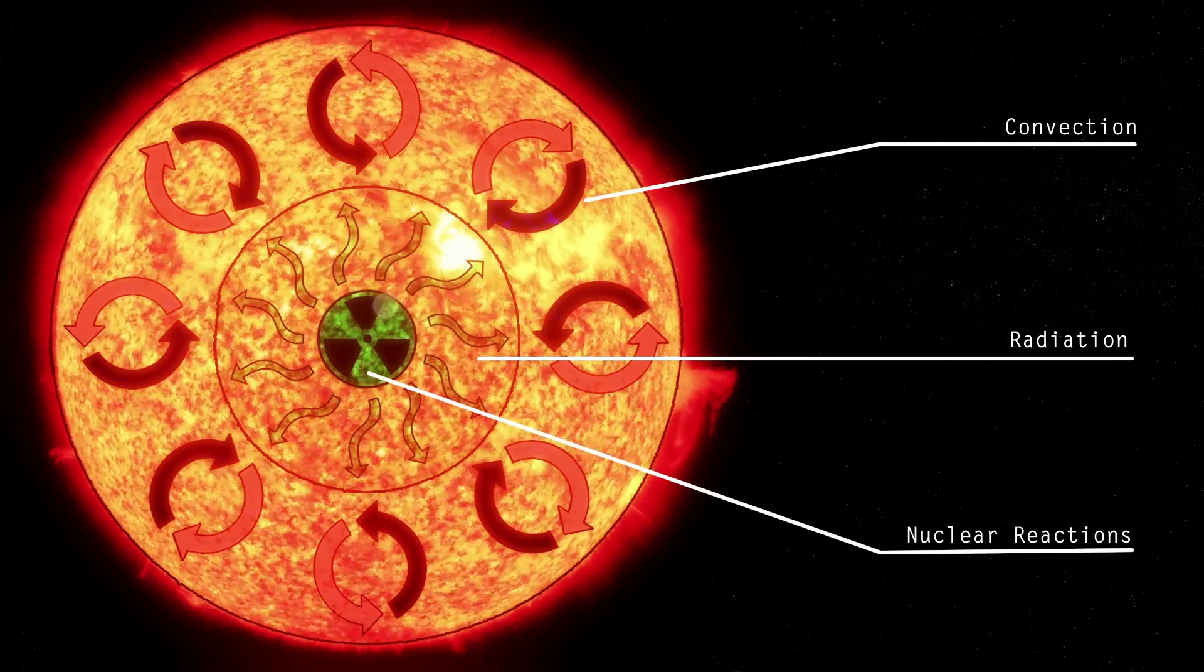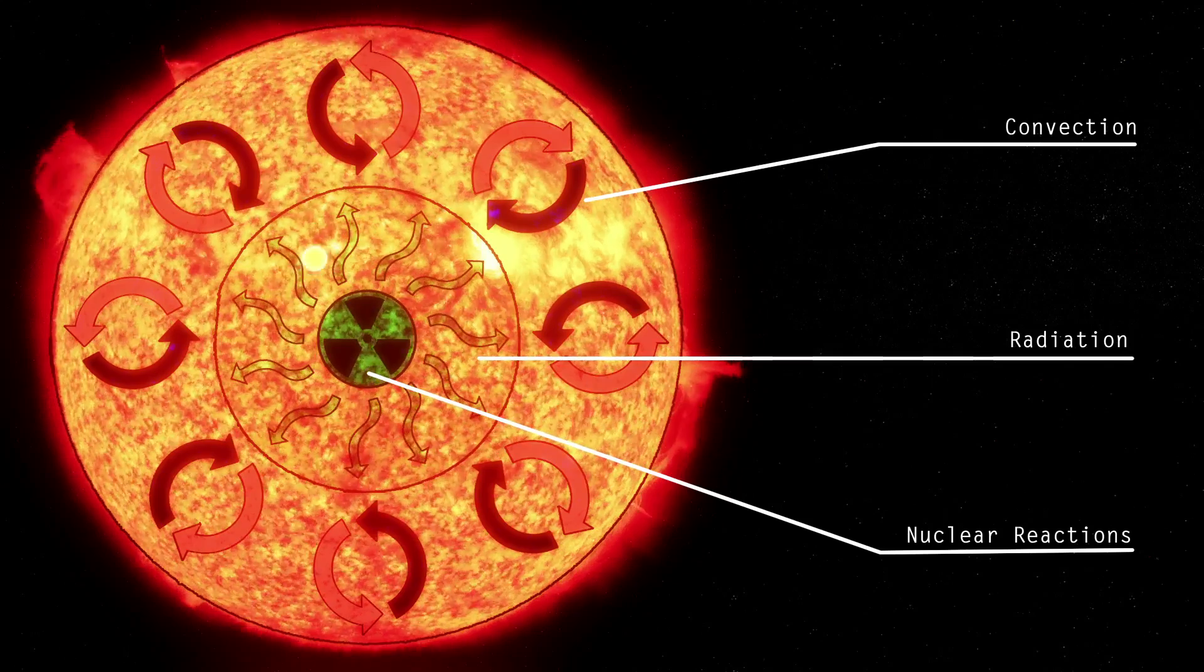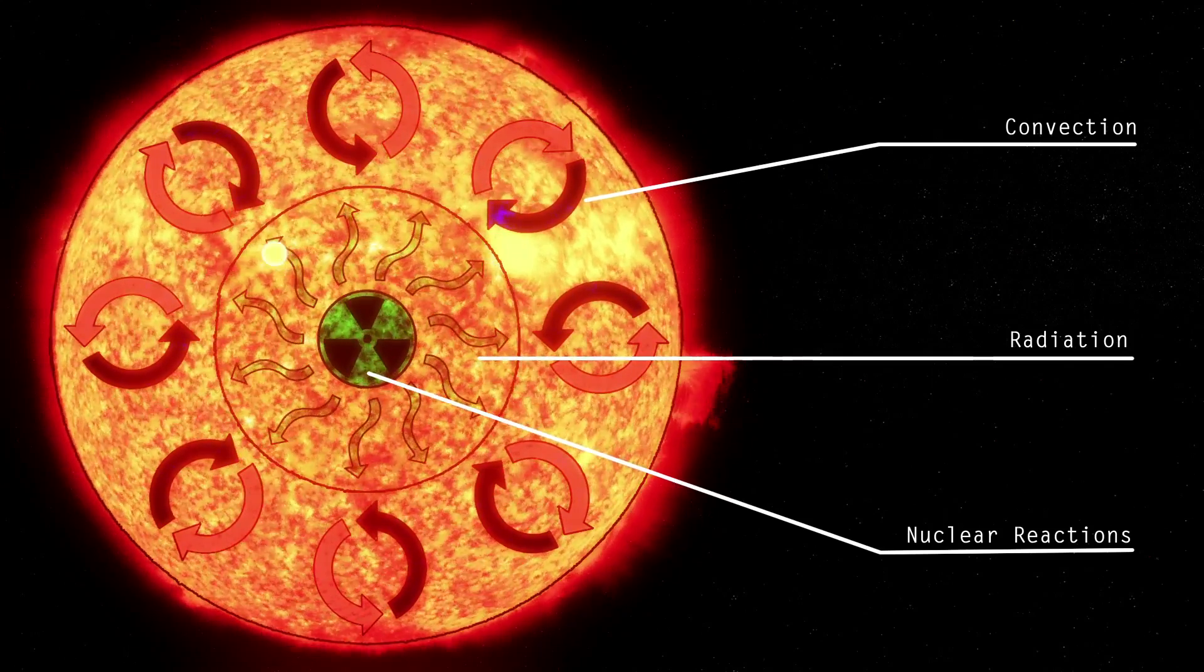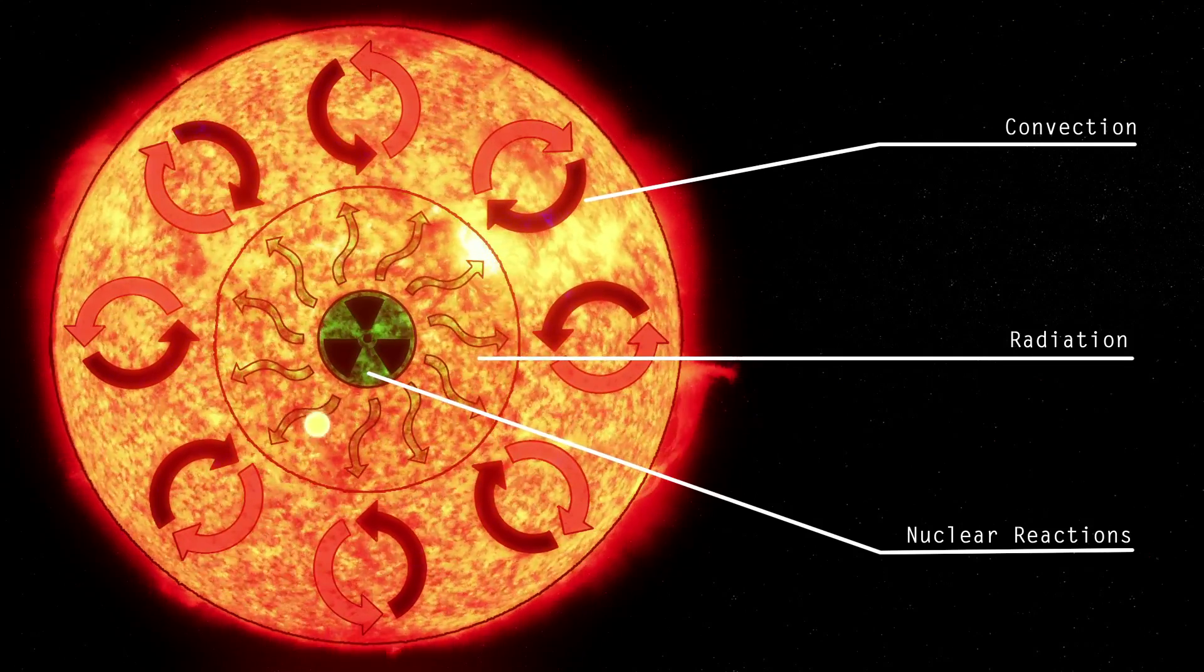High-energy photons are produced by the proton-proton chain in the core of the sun. Note that the density of the plasma here is very high, so the photon can travel only a very small distance before it collides with an electron and is redirected.